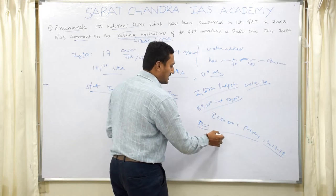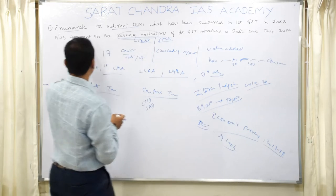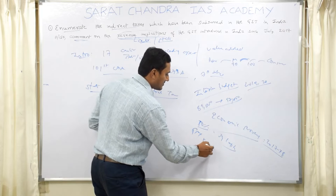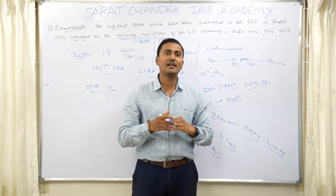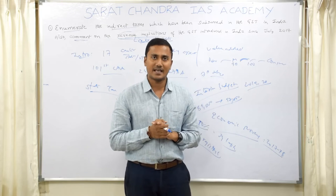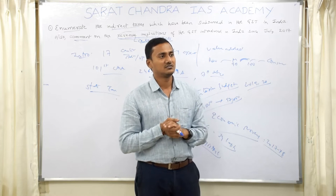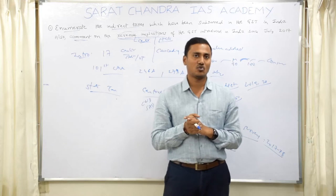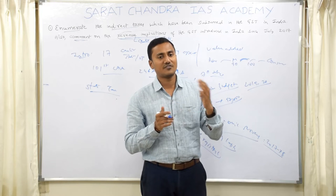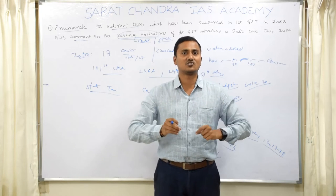There are around 34 lakh new businessmen who have come under the tax net. You can comment on the reason — GST registrations improved because of voluntary registrations due to easy tax compliance and also to avail input tax credit. Similarly, you can talk about the overall tax collection in 2016-17 being around 10 lakh crore, and there is a 10% increase in tax collection before 2017. These are the various revenue implications at the central government level.